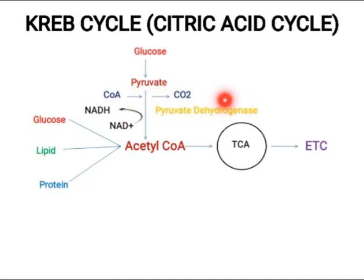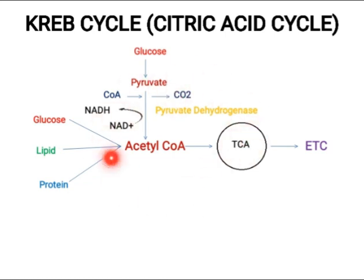So in this step, carbon dioxide and hydrogen are removed, due to which one carbon is lost from pyruvate. Pyruvate, which was previously a 3-carbon containing compound, converts into Acetyl CoA, which is basically a 2-carbon containing compound.